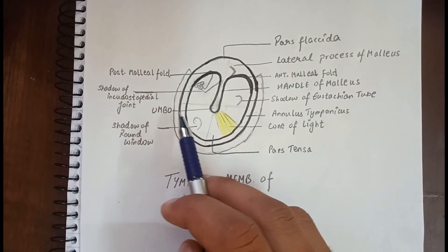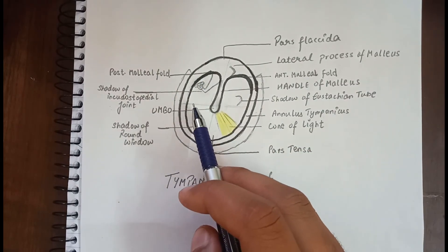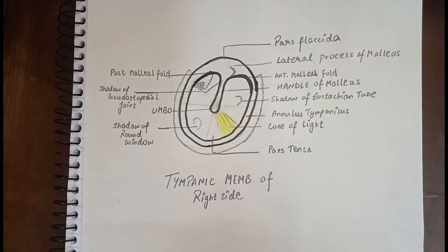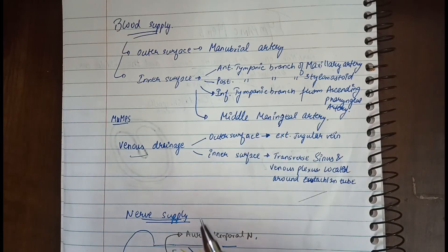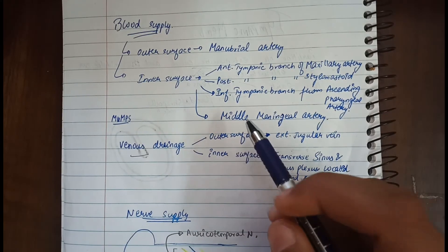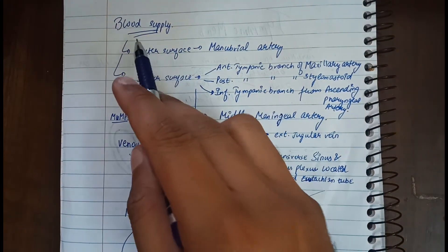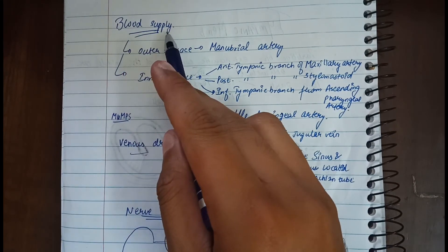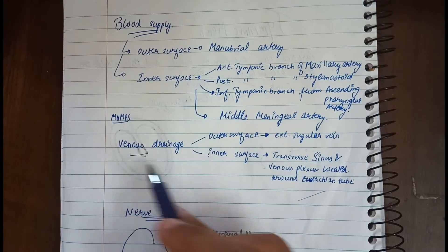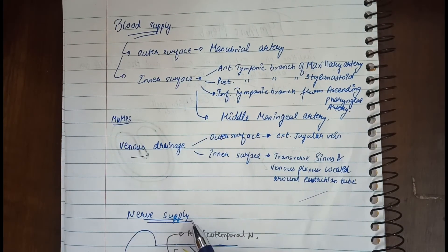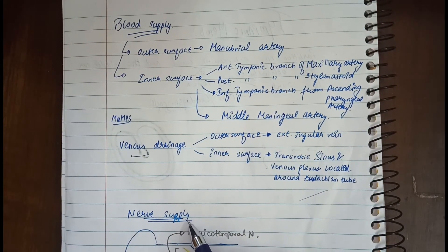Another name for the pars flaccida is Shrapnell's membrane, named after British anatomist Henry Jones Shrapnell. That concludes the landmarks of the tympanic membrane.